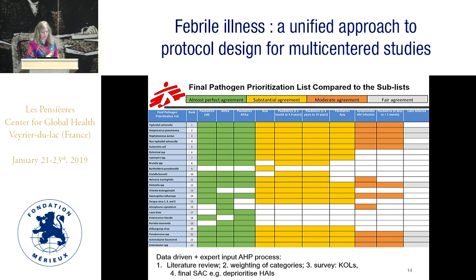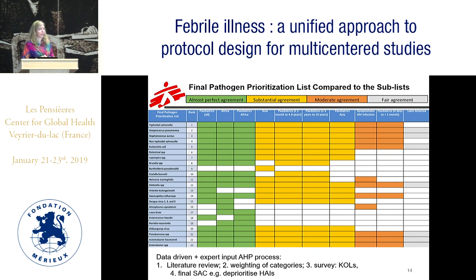We did a kappa agreement between the generalist list and all pediatrics, Africa as a region, and pediatrics in Africa — that was good news. There was also substantial agreement with the Asia list, with pediatrics above one month to five years and also five to fifteen years, and pediatrics in Asia. There was only moderate agreement with symptomatic HIV infection and pediatrics less than one month old, but we didn't think this was too bad because you'd anyway want to treat those two groups quite specifically and independently. Latin America only had fair agreement.